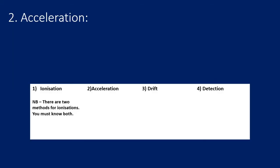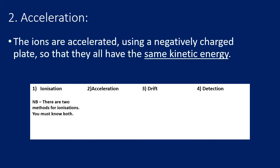The second stage, once ionization has taken place, is to accelerate the ions — speed them up. This is done using a negatively charged plate: the positive ions are attracted towards it and accelerated. Importantly, they are not accelerated to the same speed but to the same kinetic energy — this is the basis of how Time of Flight works. Using the kinetic energy equation KE = ½mv², if two particles have the same kinetic energy but different masses, the lighter particle will have a higher velocity and the heavier particle a lower velocity.